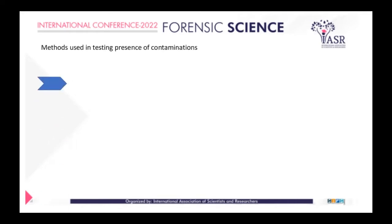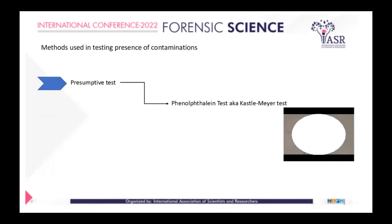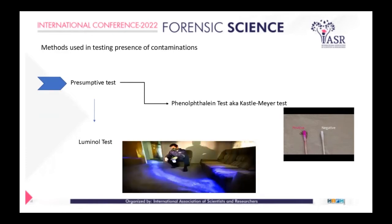There are two methods used in testing for the presence of contaminations. The first is the presumptive test. The phenolphthalein test, also known as the Kastle-Meyer test, and the second is the luminol test — commonly seen in CSI shows. The Kastle-Meyer test detects the presence of hemoglobin through the breakdown reaction of phenolphthalein reagents to leuco-phenolphthalein by zinc and regenerated by oxygen, which liberates a reddish color indicating a positive result.